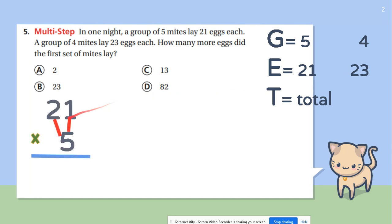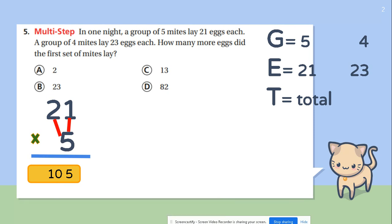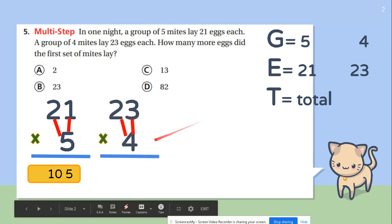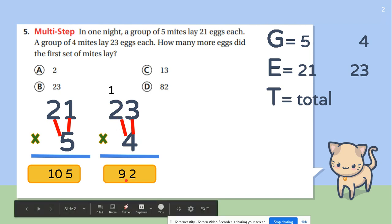So let's do step one. 21 times 5. 5 times 1 is 5. 5 times 2 is 10. So my answer is 105. We are not done yet. We still have a step 2. 23 times 4. 4 times 3 is 12. You leave the 2 at the bottom and the 1 at the top. 4 times 2 is 8 plus 1 equals 9. So my total is 92.